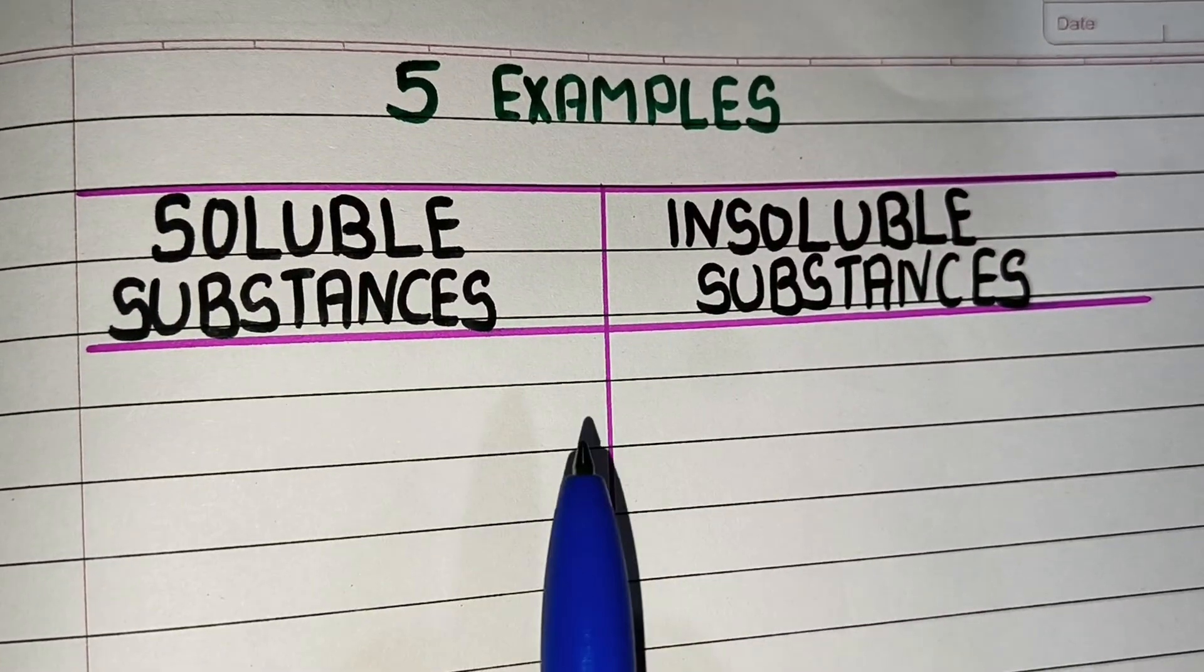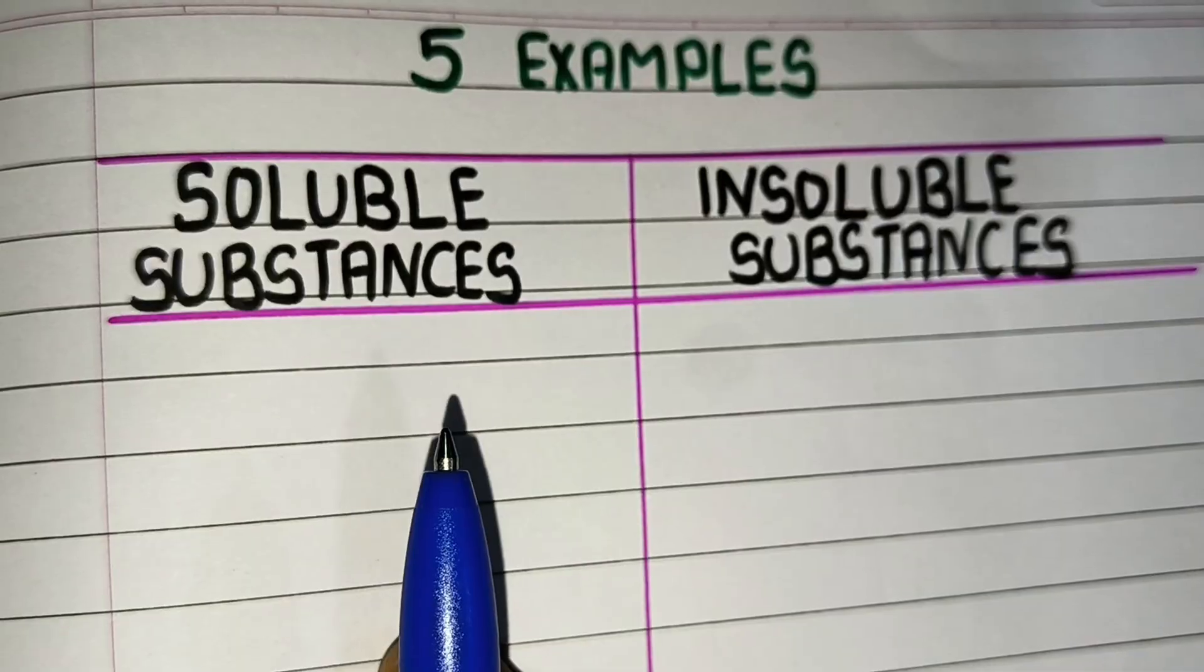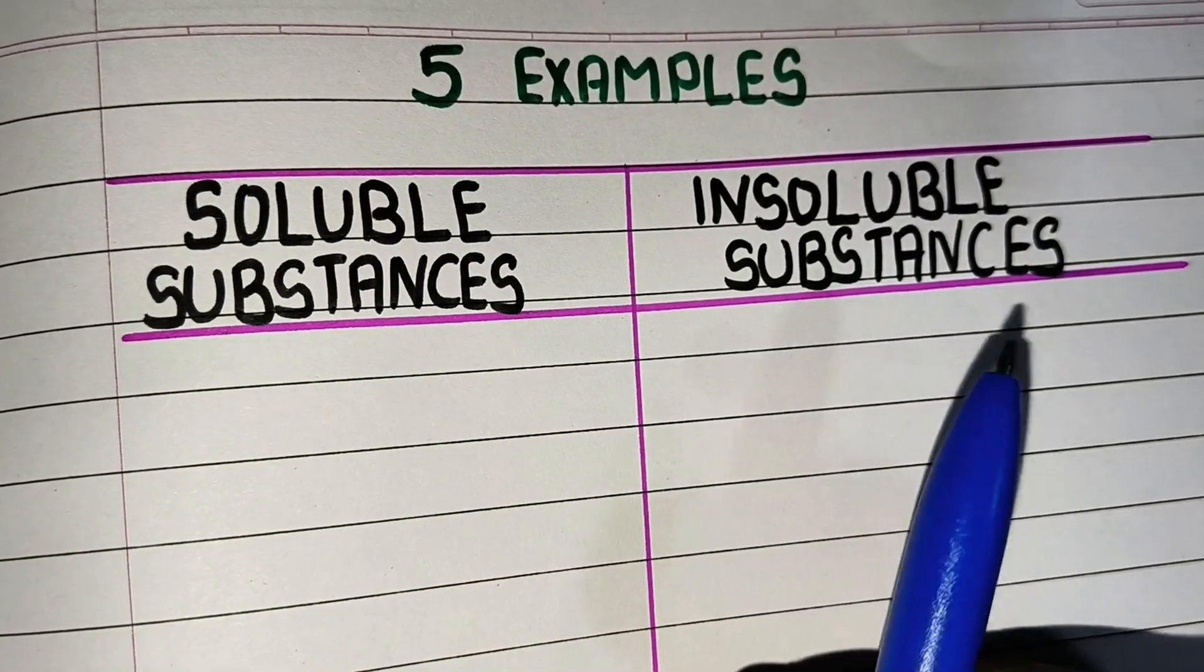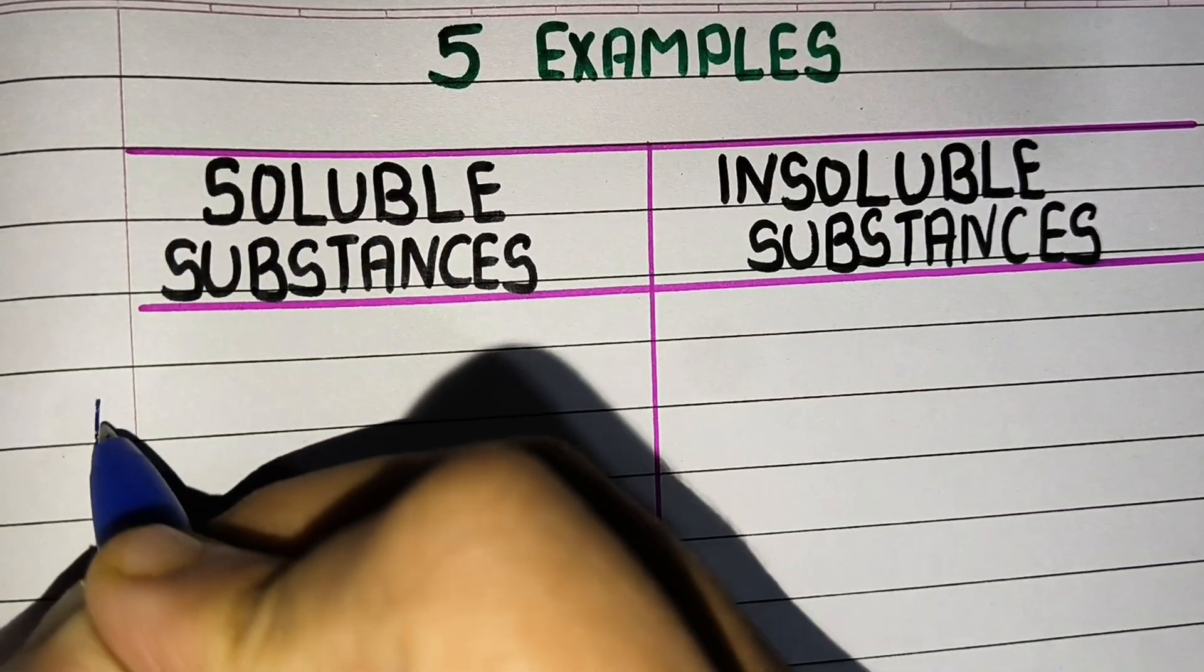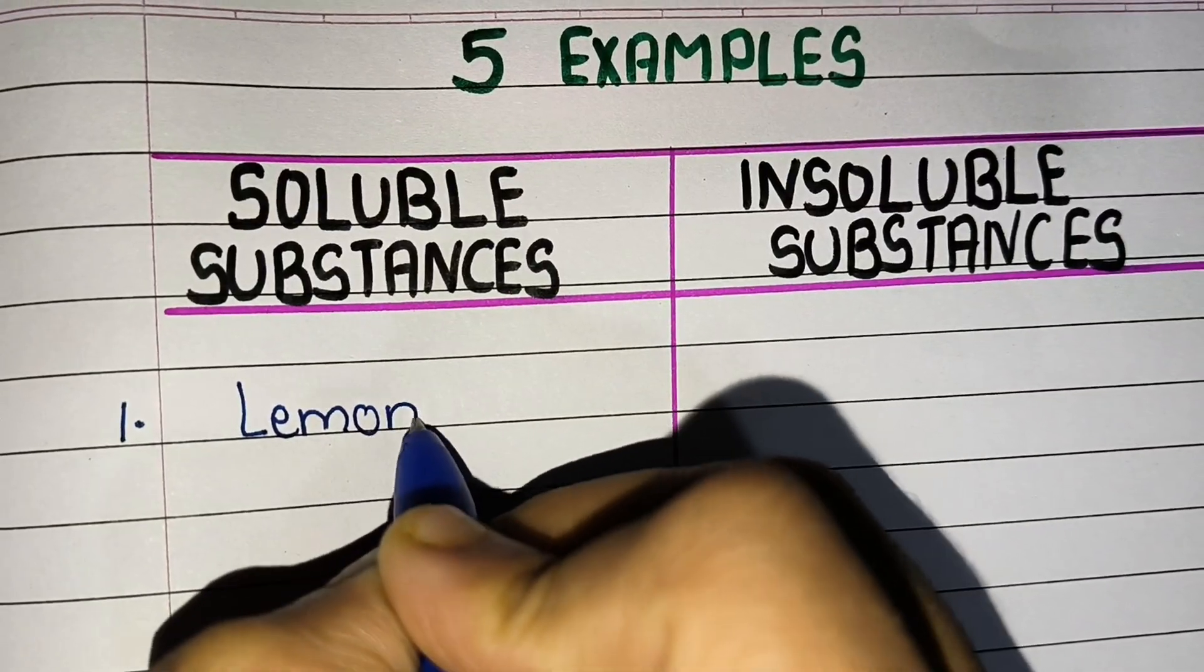Hello friends, welcome to Triyankush Learning Channel. Today we are going to learn and write five examples of soluble substances and insoluble substances. Soluble substances are substances which dissolve in water or gas.